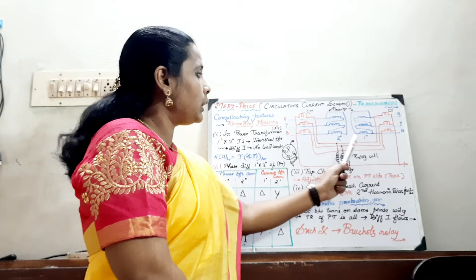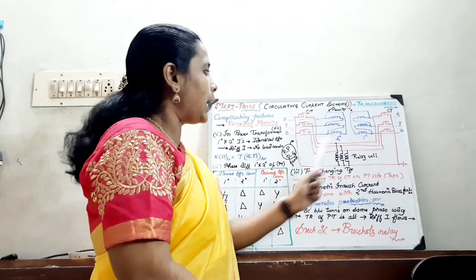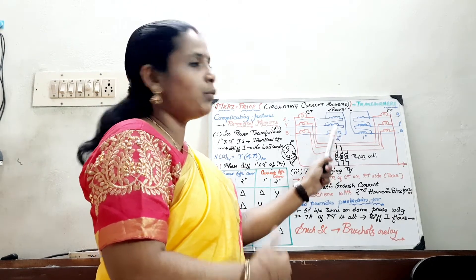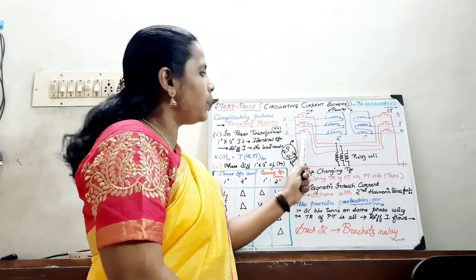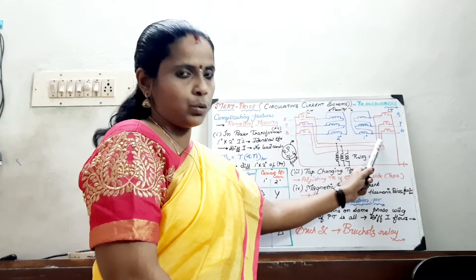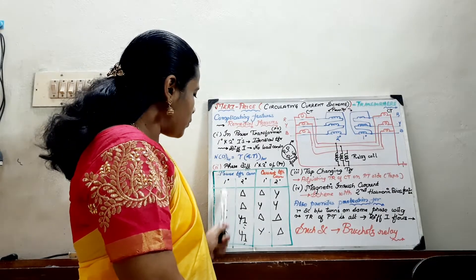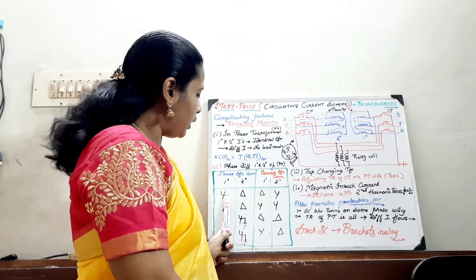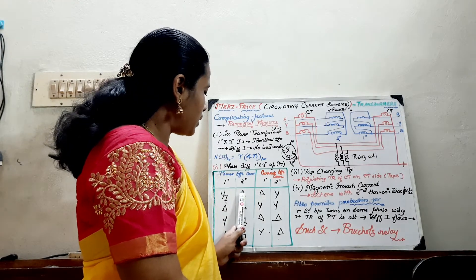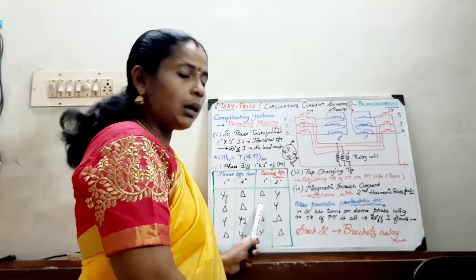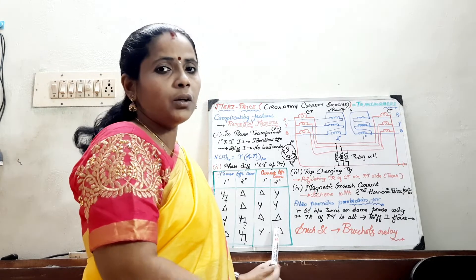The second problem is that between the primary and the secondary of the power transformer, there exists a phase difference. We have seen the magnitude difference first; there is also a possibility of phase difference even if you provide the turns ratio properly. In this case, suitable connections on the CTs must be provided — that is the solution. The power transformer connection determines the CT connection. If the power transformer primary and secondary are star and delta respectively, then the CTs should be connected vice versa — delta and star — to compensate for the phase difference. If the power transformer is star-star, the CTs will be delta-delta; if it is delta-star, the CTs should be star-delta.